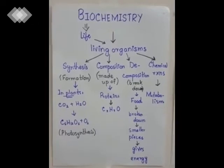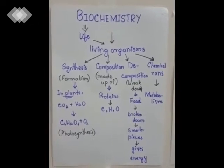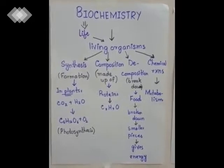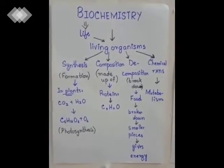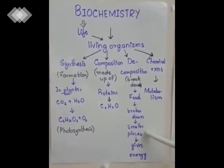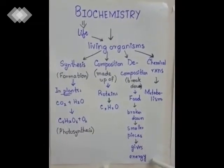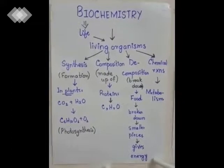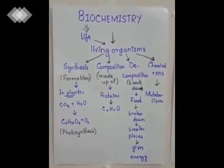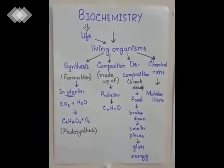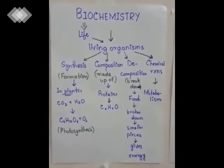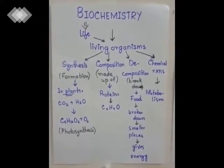The second aspect is composition, which means what something is made up of. For example, proteins are made up of carbon, hydrogen, and oxygen — that is their composition. The next is decomposition, which means breakdown. When we take food, it is broken down into smaller pieces and gives off energy — that is digestion. During digestion, energy is released and food is broken down into smaller pieces.